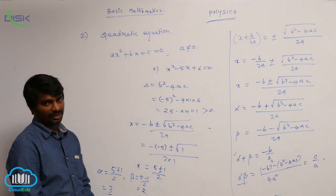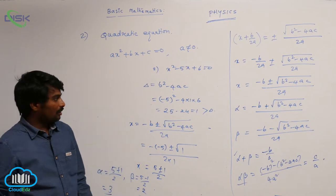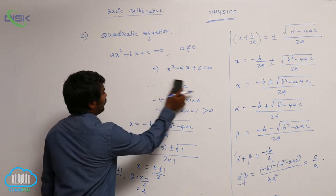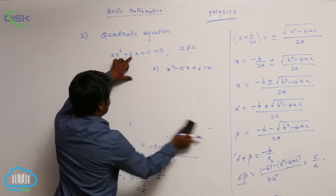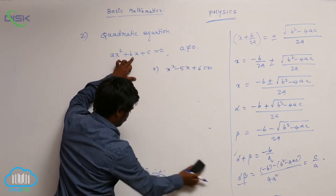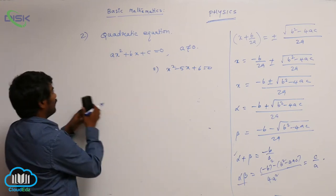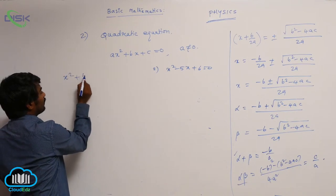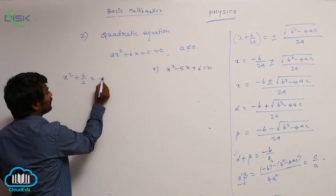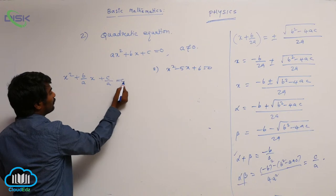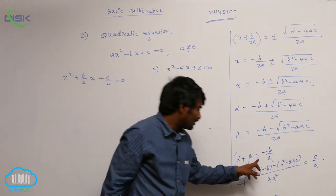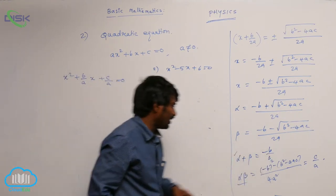That method also I will tell you. See this equation ax square plus bx plus c can be written as x square plus b by ax plus c by a equal to 0. Here sum of roots is equal to minus b by a.